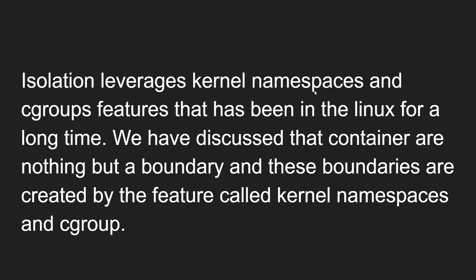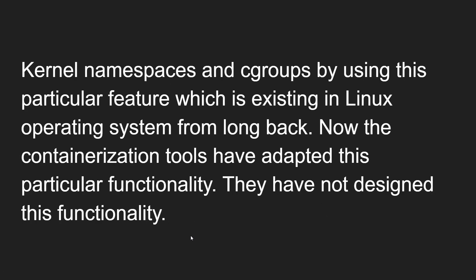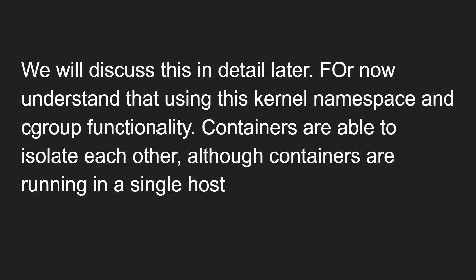Isolation leverages the kernel namespaces and cgroup features that have been in Linux for a long time. Containers are isolated from each other through kernel namespaces and cgroup features. Containers are nothing but a boundary, and these boundaries are created by the features called kernel namespaces and cgroups. Containerization tools like Docker have adopted this existing Linux functionality — they have not designed it. Using kernel namespaces and cgroups, containers are able to isolate each other although they are running on a single host.